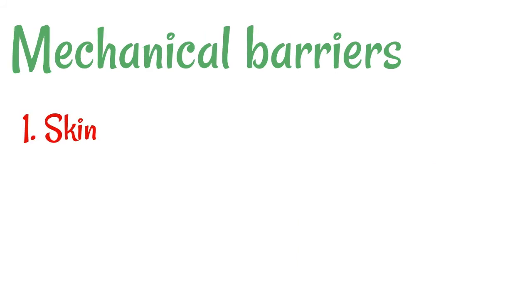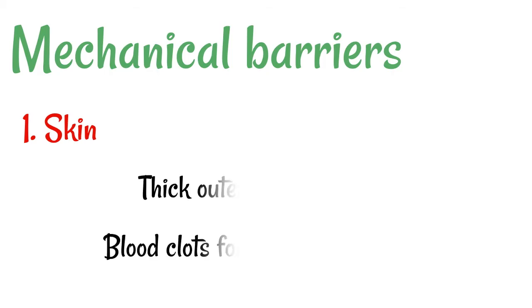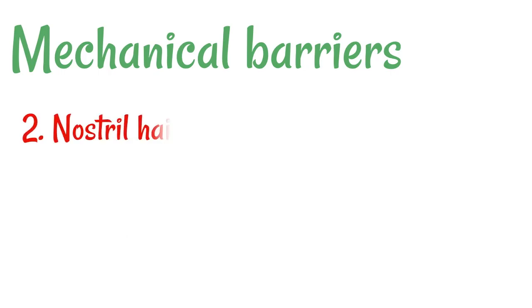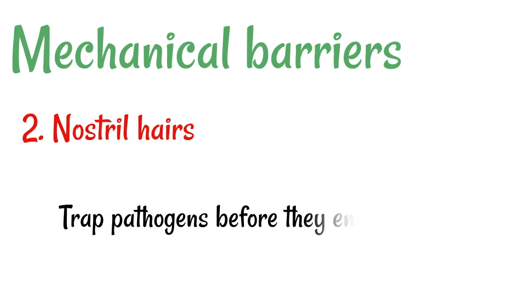Mechanical barriers — well, the first and most obvious one is the skin. That's one big gigantic shield around your body to stop things from getting inside. It's got a thick outer layer which is made of keratin, and it's also got a sort of patch-up mechanism in place for if it ever gets broken by a cut, and that is a blood clot. Another mechanical barrier is nostril hairs. They basically just trap pathogens before they get a chance to enter the body.